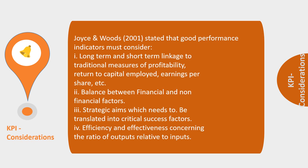If we look at KPIs, there are various indicators that, according to Joyce and Woods 2001, good performance indicators must consider. These included the long and short-term linkage to traditional measures of profitability, the return on capital employed and the earnings per share, the balance between financial and non-financial factors, the strategic aims which need to be translated into critical success factors, and the efficiency and effectiveness concerning the ratio of outputs relative to inputs. All of these factors link into your overall aims and objectives in terms of what you want to achieve for your organisation.